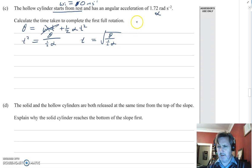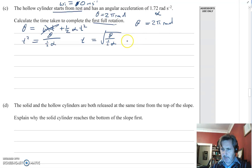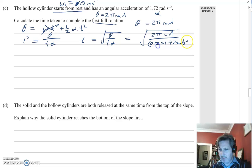One thing we need to do is find out what theta is. What have they told us about theta? One full rotation. How many radians are there in one rotation? There's two pi radians. So theta equals two pi radians. I now put this into my value. I get the square root of two pi radians divided by 0.5 times 1.72 radians per second squared. And the answer we get for this equals 2.70 seconds.